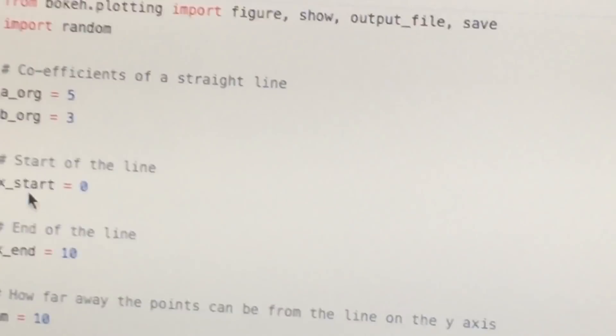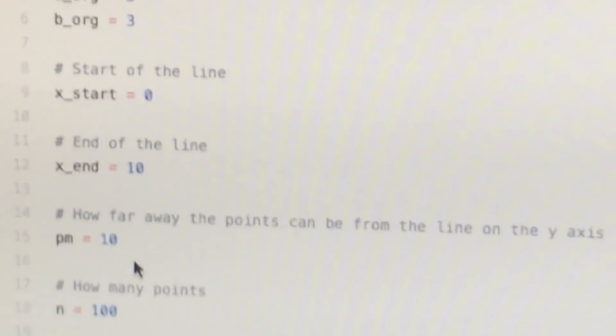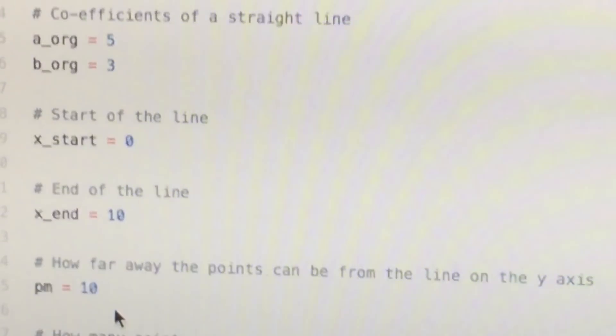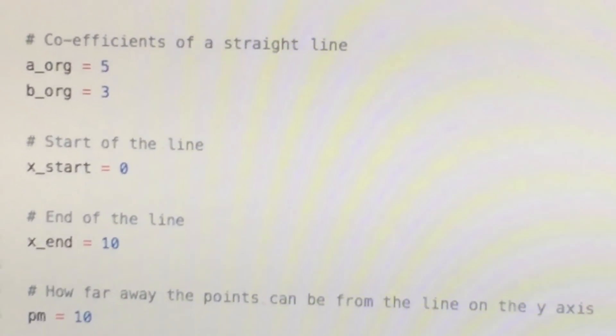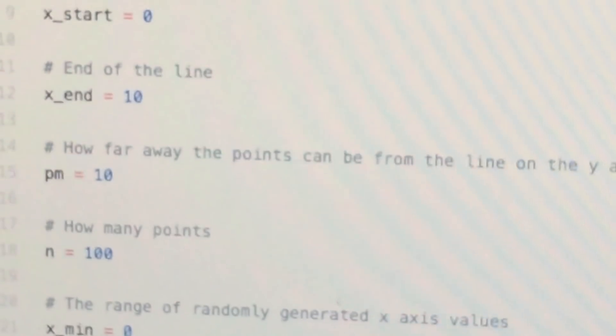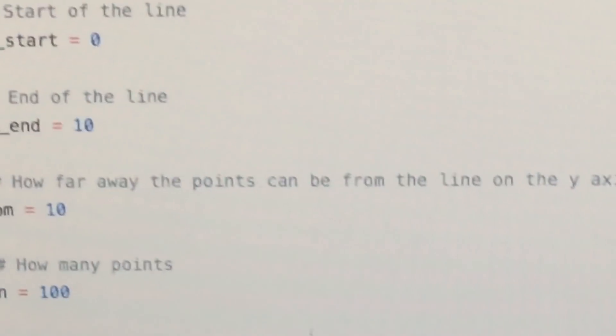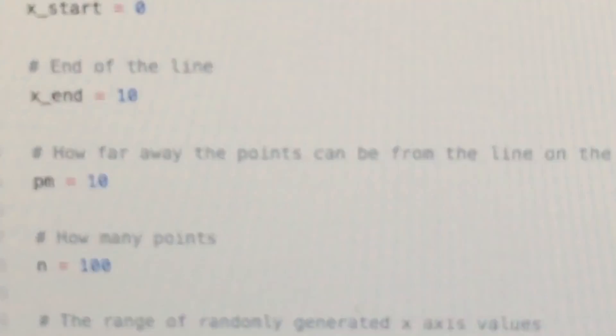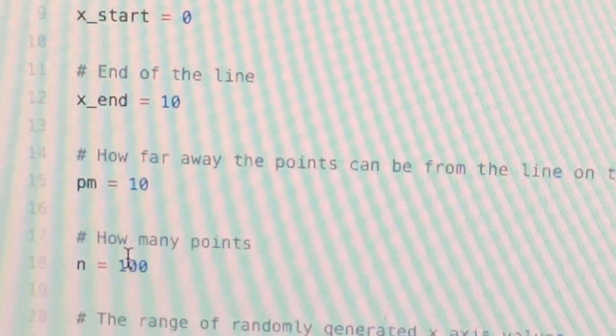How far away the points can be from the line on the y axis. So you have the line, and then you need to figure out how bulky the generated scatter plot will be - will it be really skinny or bigger.